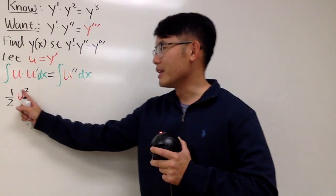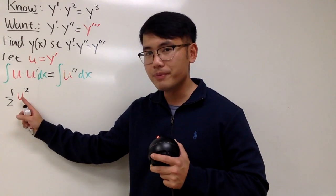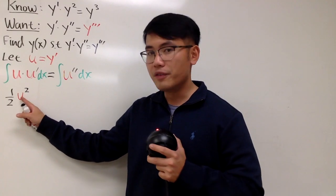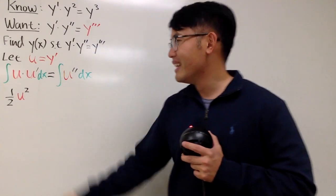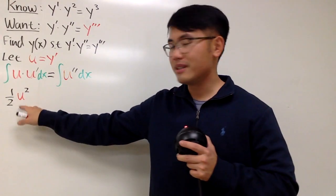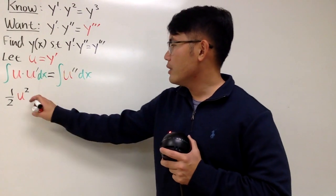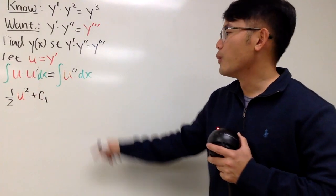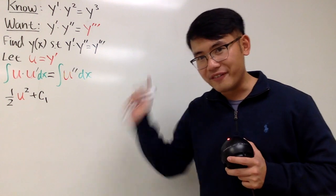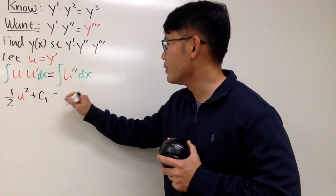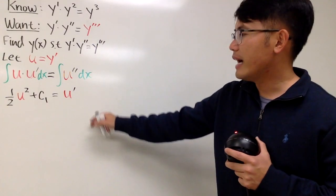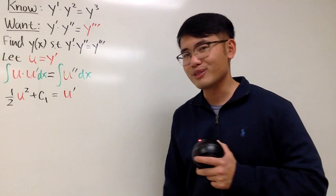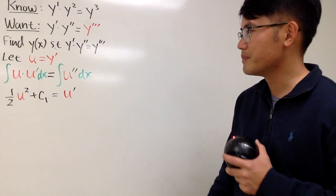Let me tell you why. If you differentiate 1 half u squared, you put the 2 in front, you get u, and don't forget the chain rule — you have to multiply by the derivative of u, which is u prime. So when you integrate, it's very nice to get that. I'm going to put down a constant, plus c1. On the right-hand side, when you integrate the second derivative, you get the first derivative, which is u prime. We don't need a separate constant on the right — it can be absorbed into c1.